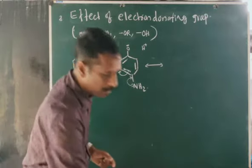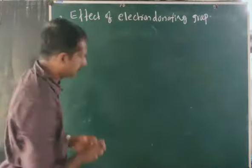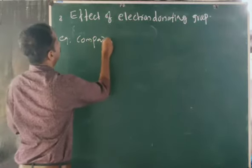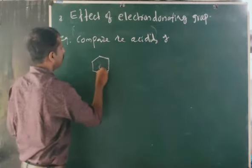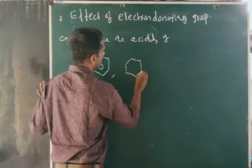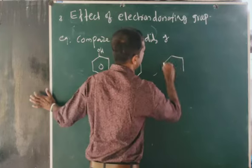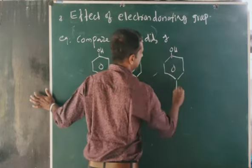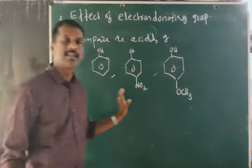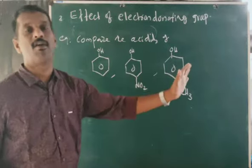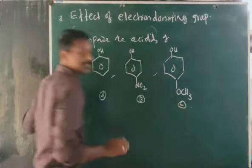Now let's look at an example. Compare the acidity of three compounds: compound A is phenol (OH), compound B is nitrophenol (OH with NO2 group), and compound C is methoxyphenol (OH with OCH3 group). We need to arrange them in order of acidity. In compound B, there is an electron withdrawing group — the NO2 group.